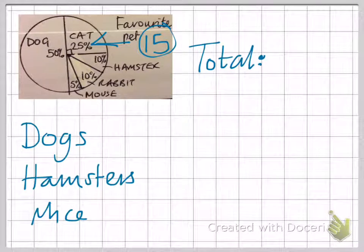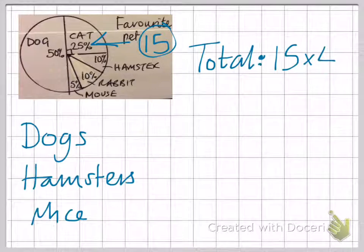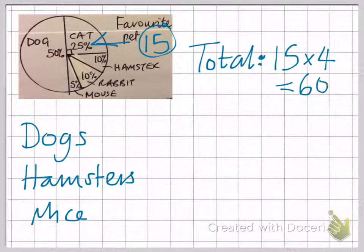Sometimes you're given a percentage pie chart where they only give you one sector, and you then have to work out the total before you can work out any of the others. For this one, we're given the fact that the cat sector is worth 15 children. So the total would be 15 times 4, which equals 60.